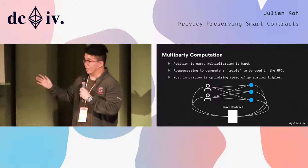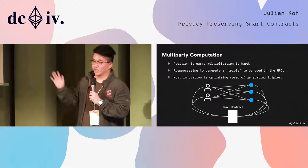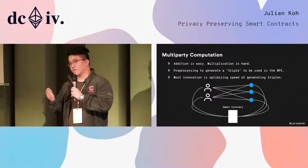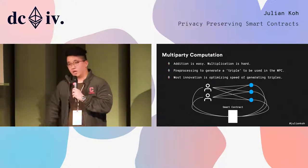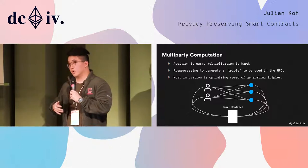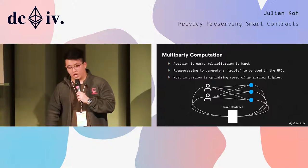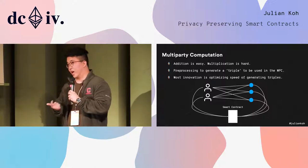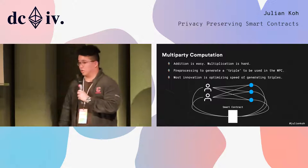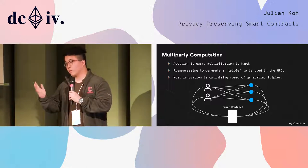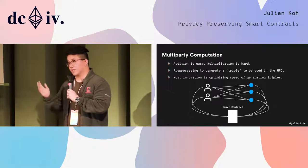Addition is really easy with MPC; multiplication is super hard. But there are a lot of cryptographic ways of doing it, and most of the cutting-edge work today is trying to optimize multiplication. If you can do multiplication and addition, you can do any computation in the entire world — that's how you achieve Turing-complete private smart contracts.